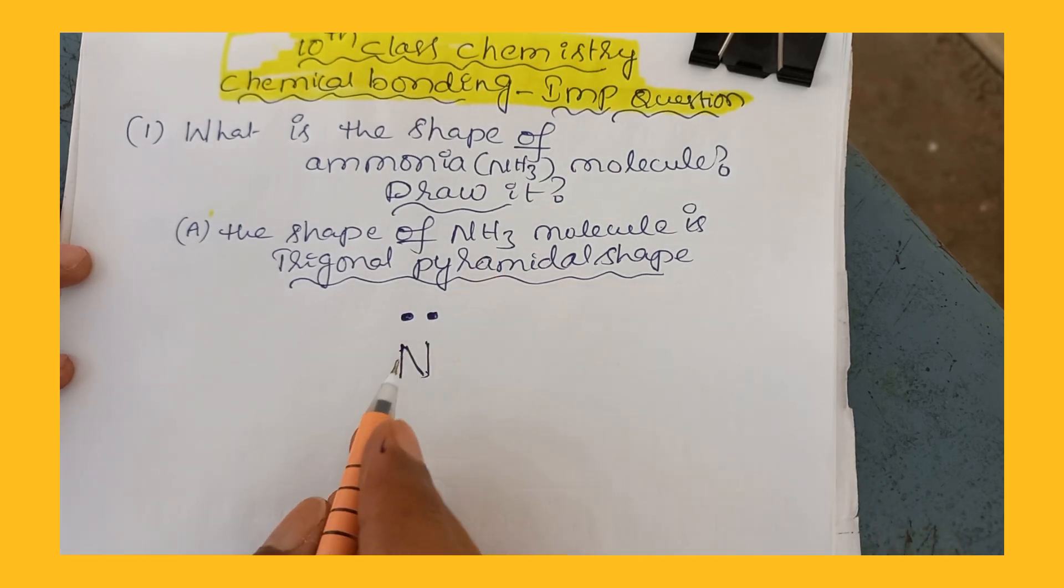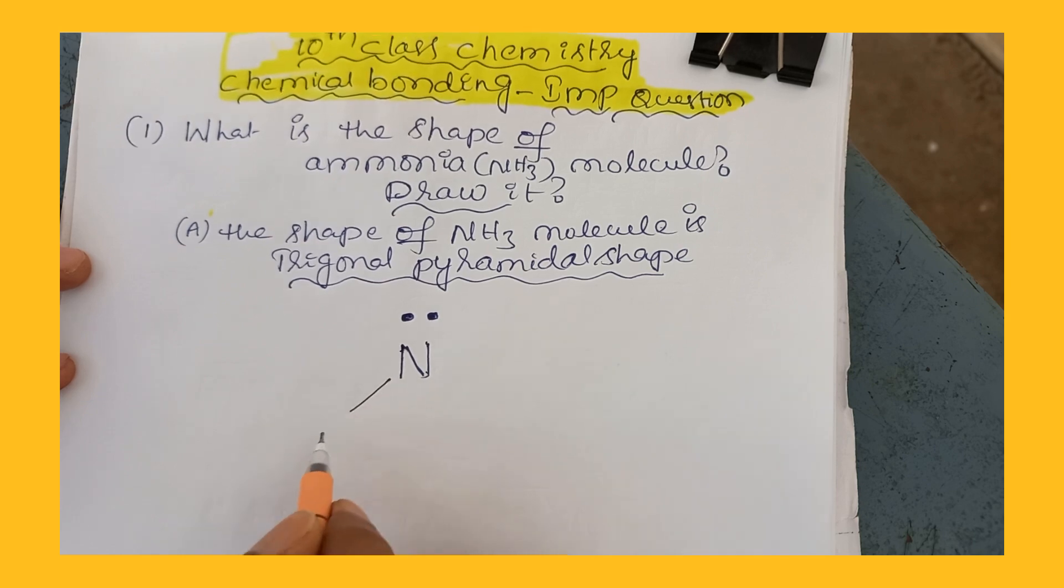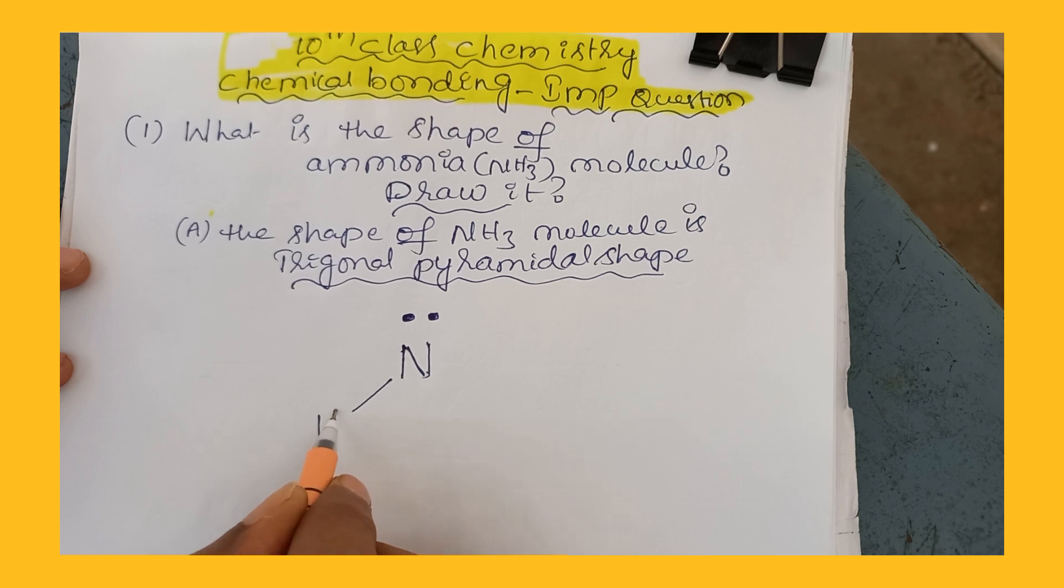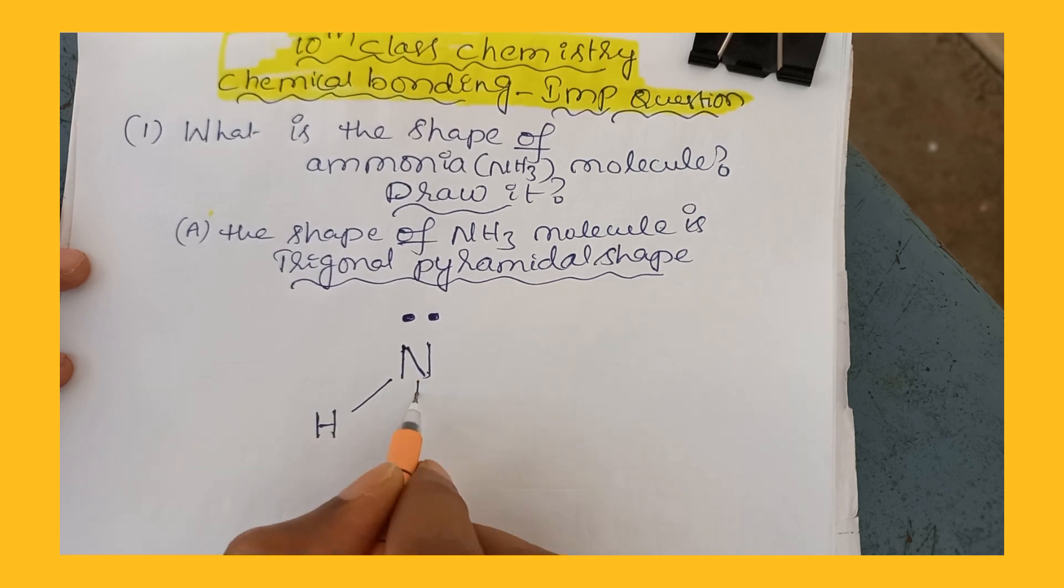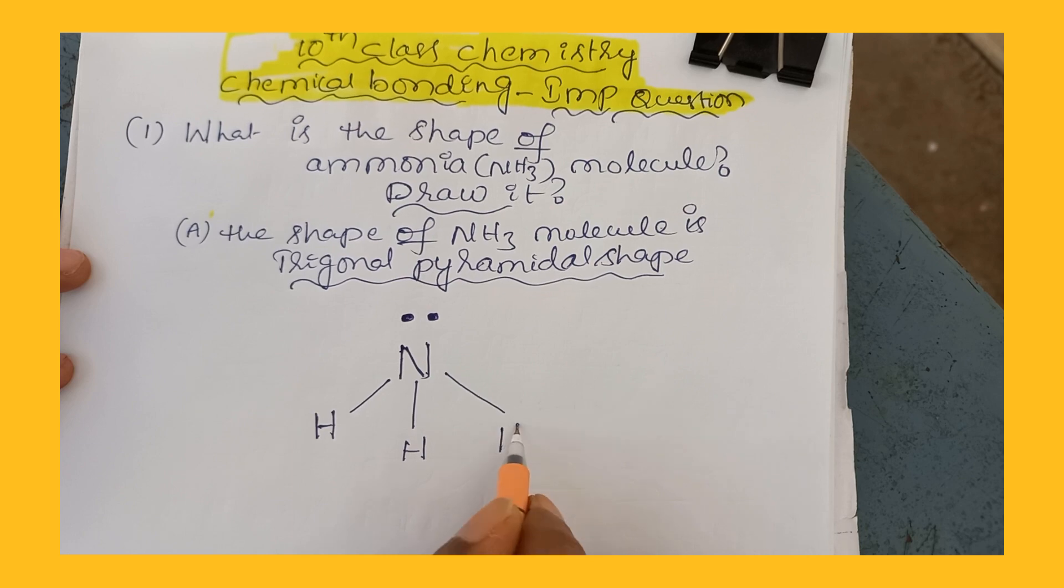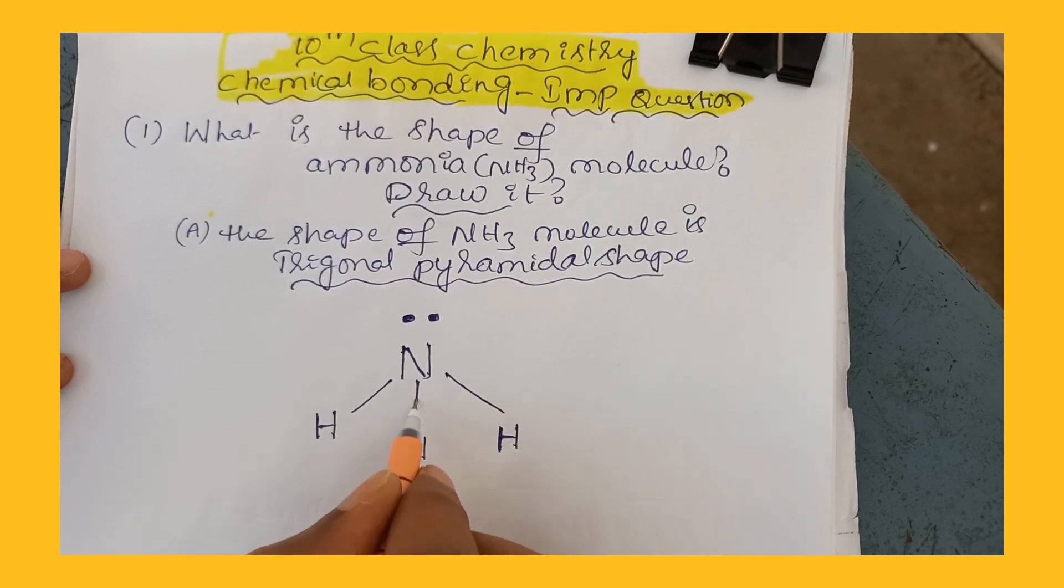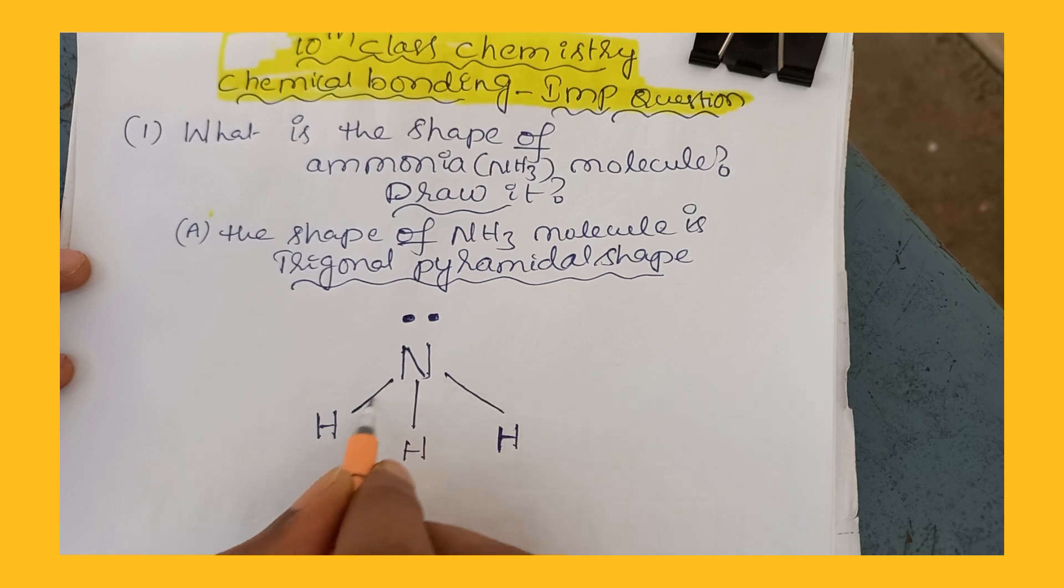Remaining three bonded atoms are hydrogens. Every hydrogen atom is bonded with nitrogen by a single bond. So each line is representing there is a sharing of one pair of electrons.